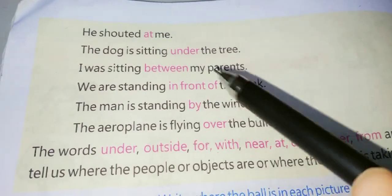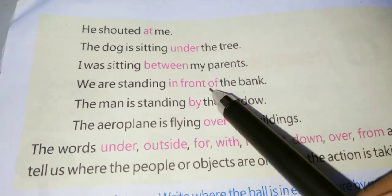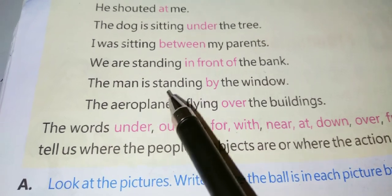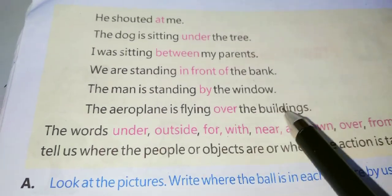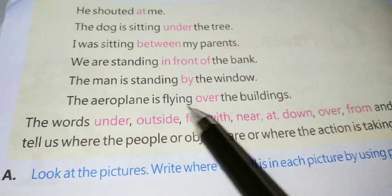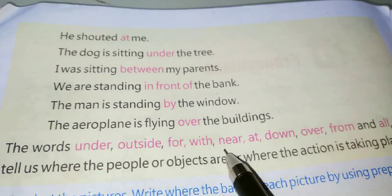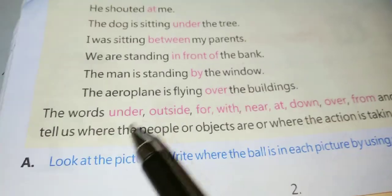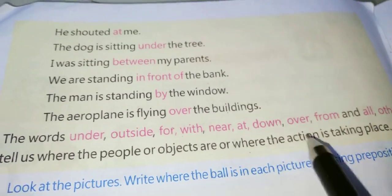We are standing in front of the bank — 'in front of' is a preposition. The man is standing by the window — 'by.' The aeroplane is flying over the buildings — 'over.' The words under, outside, for, with, near, at, down, over, from, and so on tell us where the people or objects are or where the action is taking place.